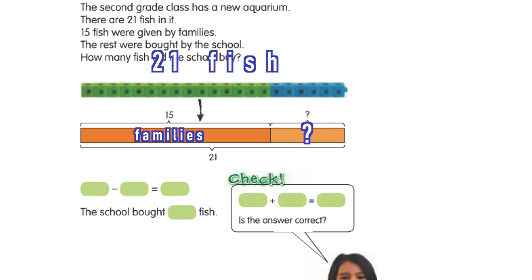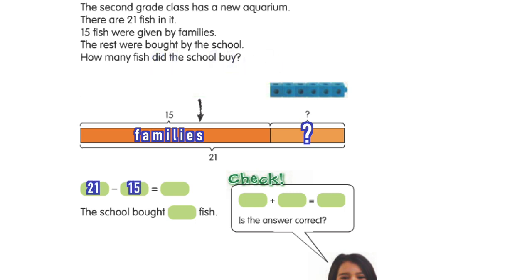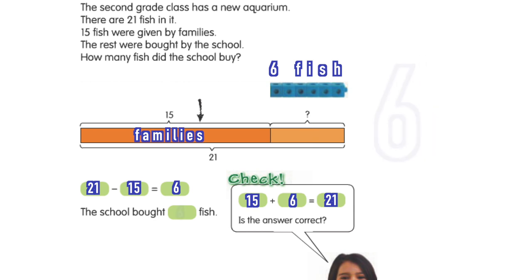Whenever students label the question mark it helps them to not get lost in their calculations when they get into those complex problems. From there they realize that this is a part-whole bar model and they can subtract. They take 15 away from 21, taking away those green blocks, and they realize that their answer — they can count their blocks up — is 6. Then they check if their answer makes sense. Does 6 fish make sense in this bar? Yes, it does.